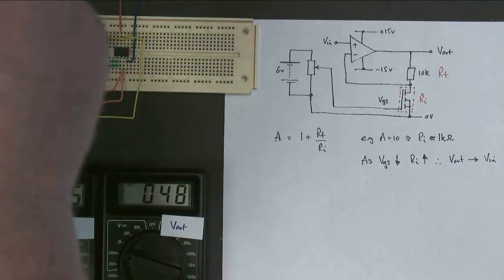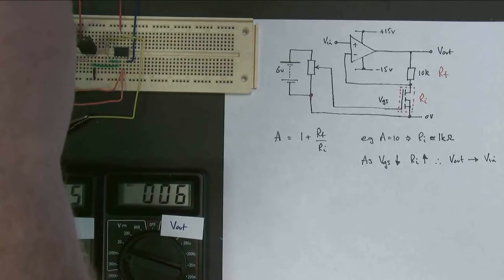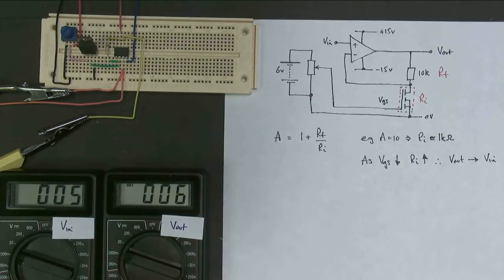So we'll take our voltage right down, and what you can see now is that my meters aren't necessarily very accurate, they're not quite reading the same value, but the output and the input are the same if I change the input voltage.